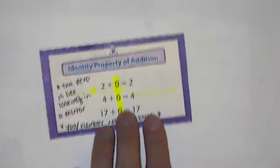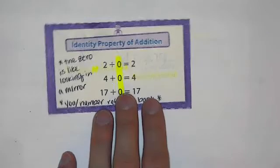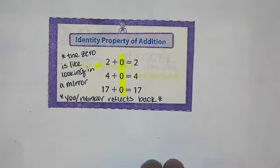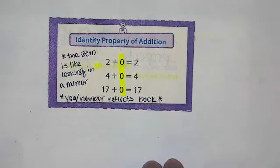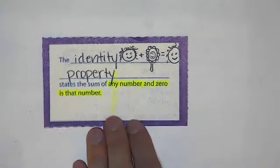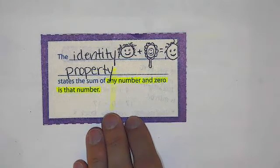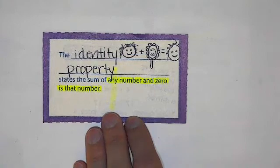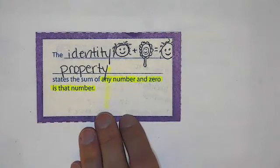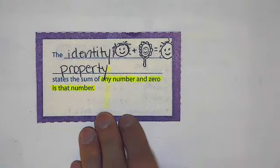The last one is the identity property. Zero is like looking into a mirror. You or the number that is looking into the zero will reflect back. So the identity property states that the sum of any number and zero, adding zero, is that number. So you can see the person looking into the zero which looks like a mirror is that person.